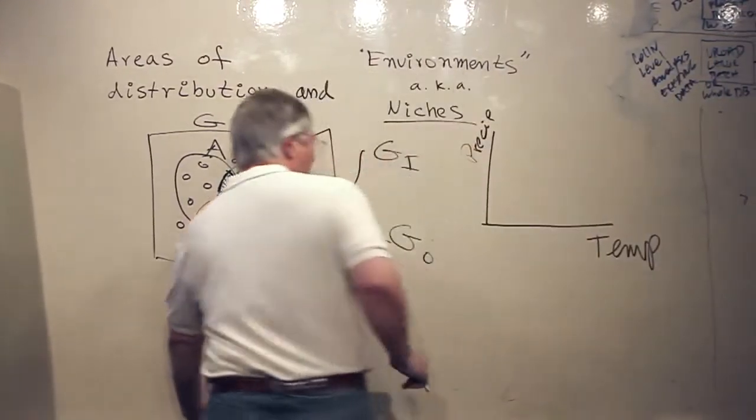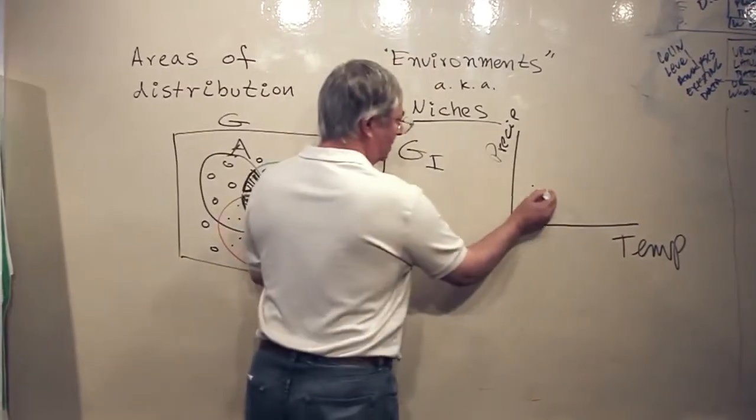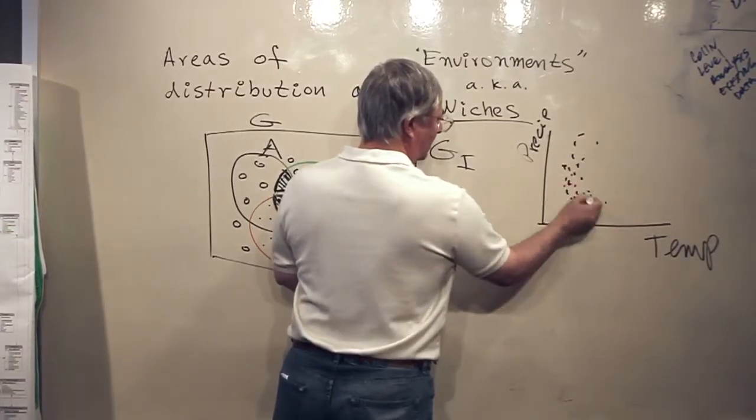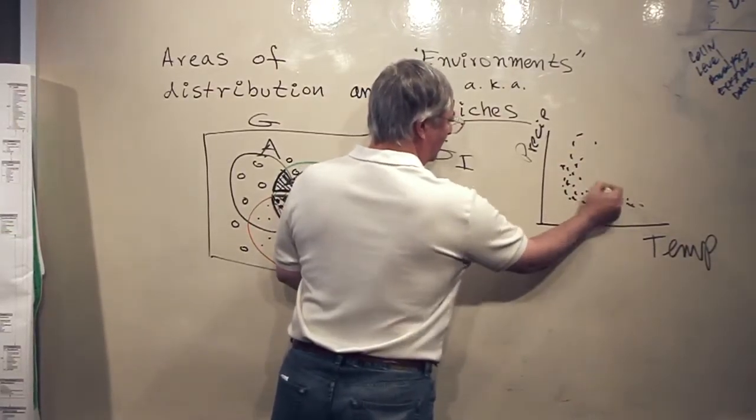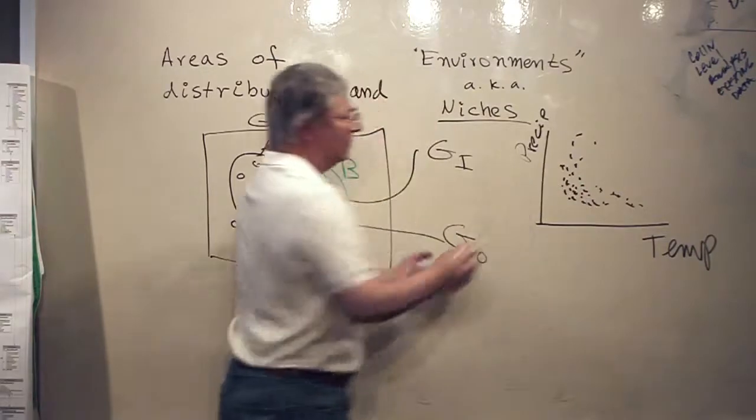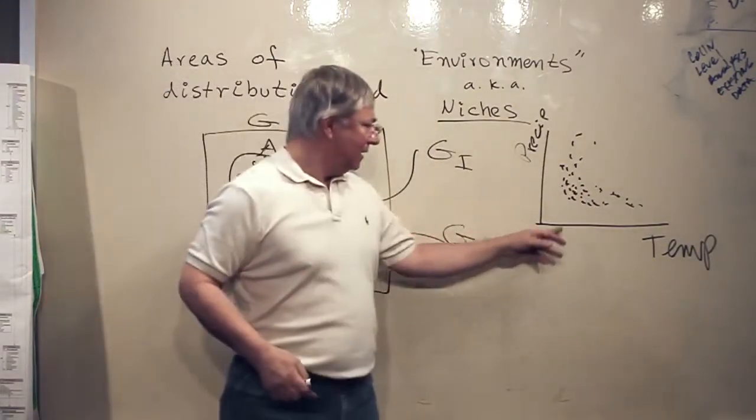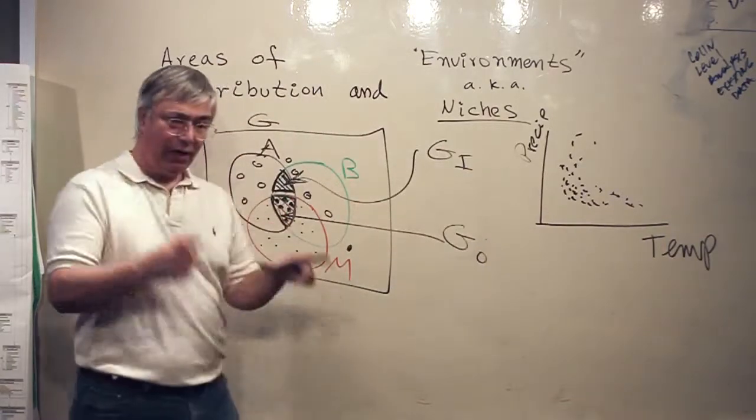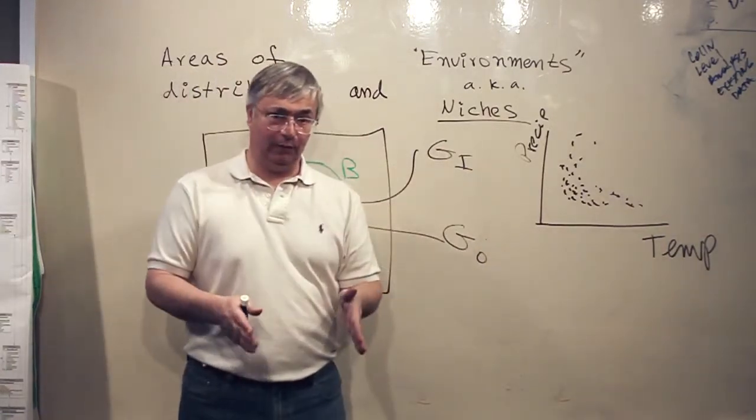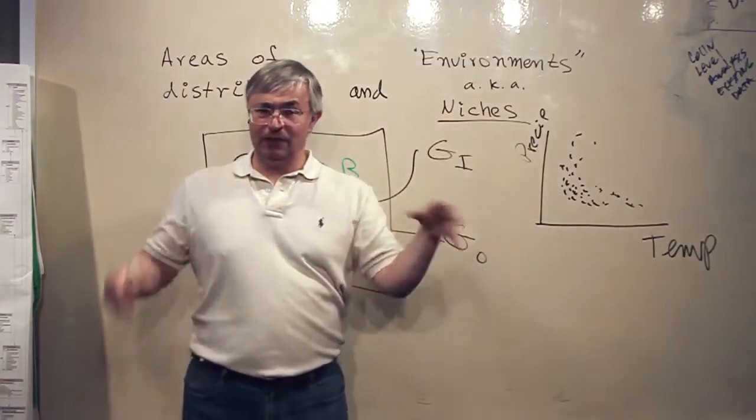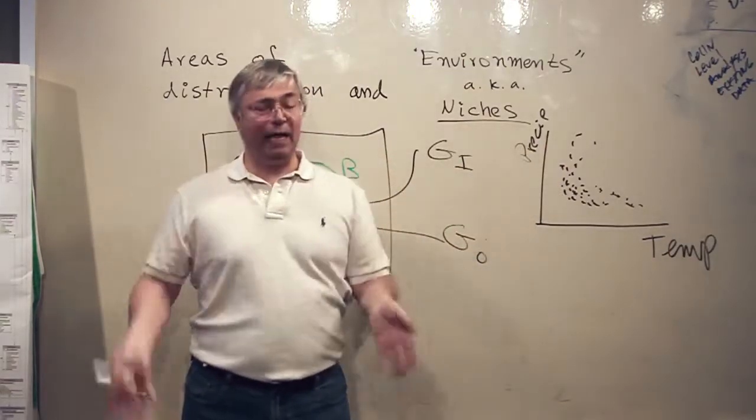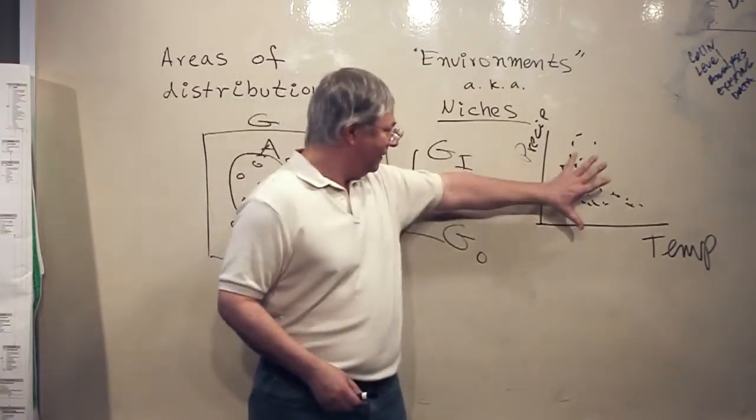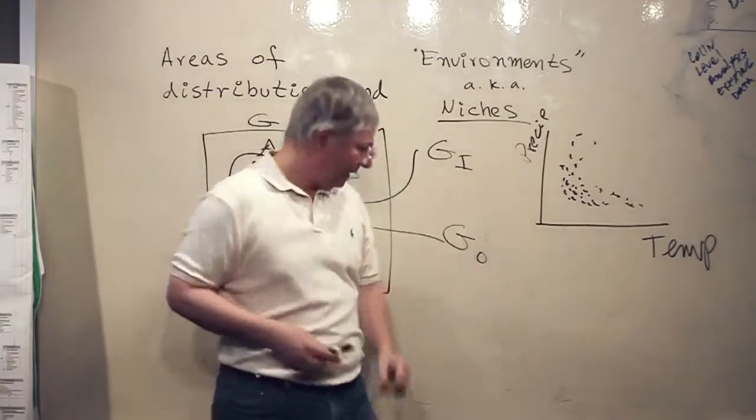Inside this space, there will be points which are the combinations of precipitation and temperature that actually occur in geography at a given period of time. This is changing all the time because climate is changing all the time, with or without us, it's changing. So, the shape of this cloud is extremely dynamic.